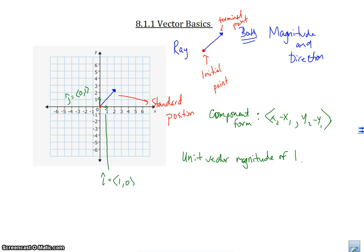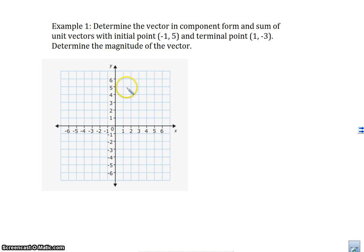Determine the vector in component form and the sum of unit vectors with initial point negative 1, 5 and terminal point 1, negative 3. So what we're talking about is, you know, we have this point here, that would be our initial point, and then our terminal point 1, negative 3 is right here. And I have a vector that looks like that. And what I'm going to do is I'm going to take this vector, and I'm going to move it into standard position right here. And so that's what the vector I want to find now. So how do I do that?